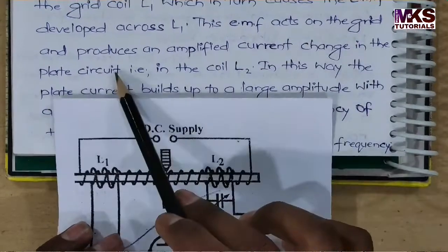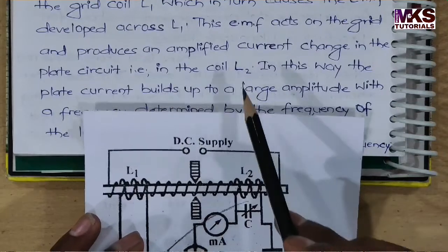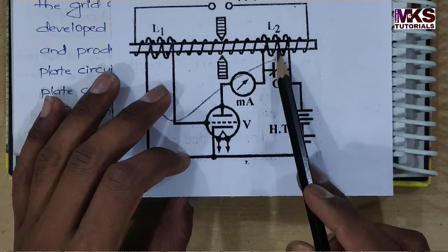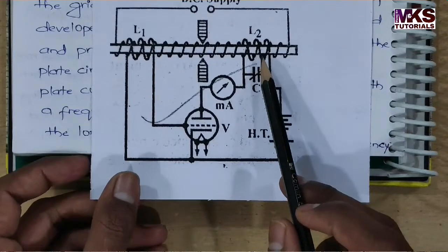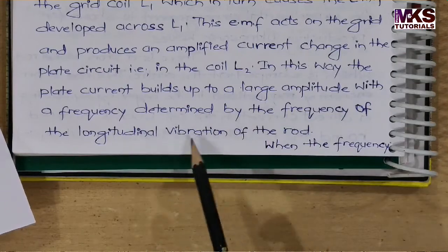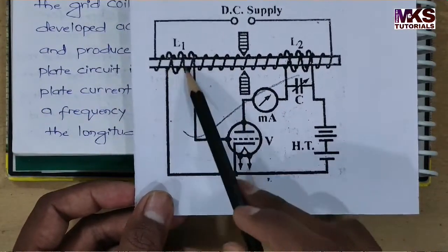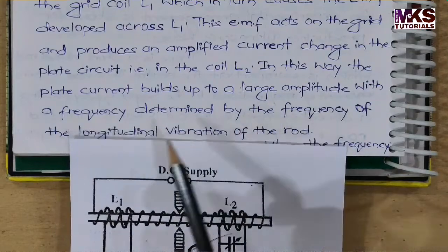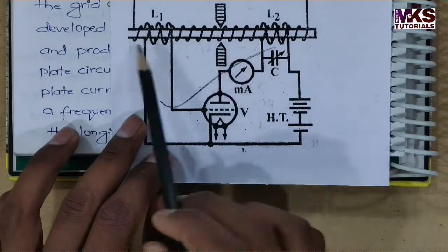This EMF acts on the grid and produces an amplified current change in the plate circuit, that is in coil L2. Changes in L2 in turn affect the magnetization of the rod, and the plate current builds up to a large amplitude, with the frequency determined by the frequency of the longitudinal vibration of the rod. The rod undergoes longitudinal vibration — it starts vibrating along its length.